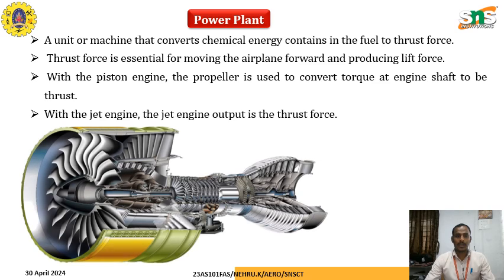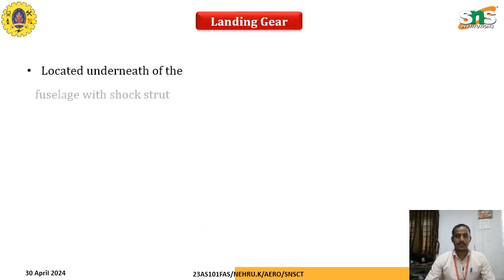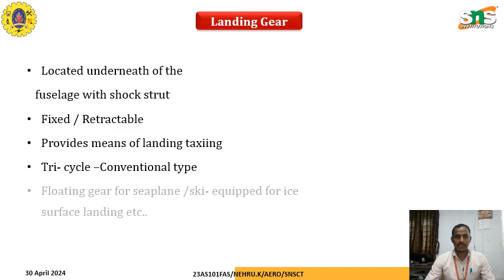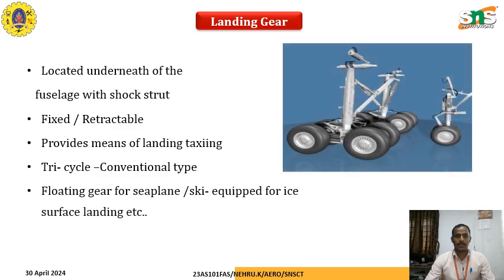The power plant is a unit or machine that converts chemical energy from fuel to produce a thrust force. This thrust force is essential for moving the airplane forward and producing lift force upward. The piston engine, propeller engine, or jet engine are used to produce these thrust forces. The landing gear is located underneath the fuselage with shock struts. It may be a fixed or retractable landing gear, providing means for landing and taxiing in tricycle or conventional-type models. Floatation landing gear for seaplanes and skid equipment for ice surface landing are also used in special cases.